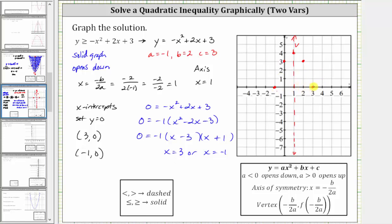Notice both x-intercept points are two units from the axis of symmetry. Now let's graph the parabola. Remember, because of the inequality symbol, we are making a solid graph. So the graph of the parabola looks like this.